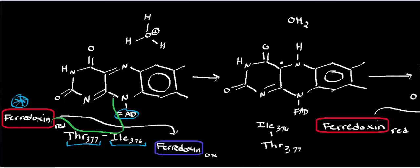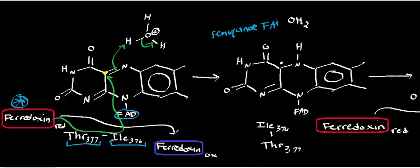The electron is going to attack a specific carbon on the FAD, and that's going to release the pi electrons to come out and nucleophilically attack hydronium, generating water and a protonated radical FAD. This intermediate is what we refer to as the semiquinone — the semiquinone radical of FAD.